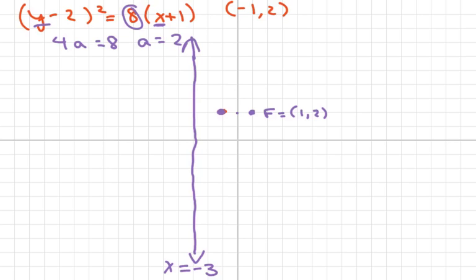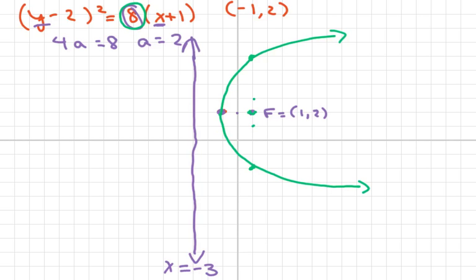For the latus rectum points, the length is 8 — that's taken directly from the coefficient. I go to my focus and go up four and down four to make it symmetric, so the total length is eight. Adding four to the y-coordinate of the focus gives one comma six, and subtracting four gives one comma negative two. Those are the two points defining the latus rectum.